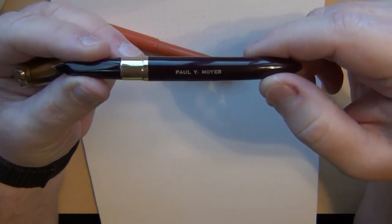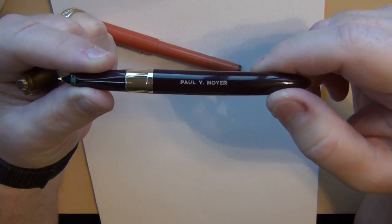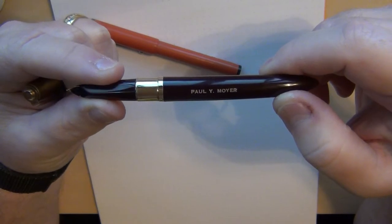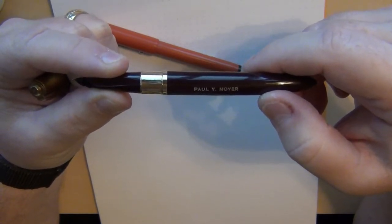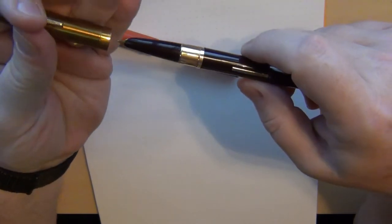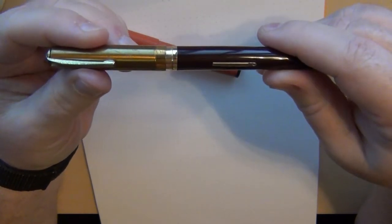The only thing you can see is it was owned by a Paul Y. Moyer. So if you are Paul Y. Moyer or his family and he owned this pen during the 1950s and 60s, if you want it I'm holding it for ransom. Come up with some money and I'll gladly send it to you.